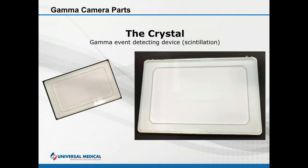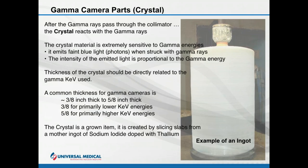The next device is the crystal. It detects the gamma rays and creates scintillations — as gamma rays pass through the collimator they react with the crystal, scintillating and creating photons with a very light blue hue. The number of photons created is proportional to the energy of the original gamma ray: high energy creates more light, low energy creates less. The thickness of the crystal must be considered — too high an energy has a probability of penetrating through without interacting, so higher-energy studies require a thicker crystal.